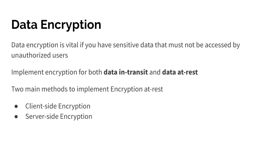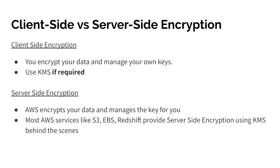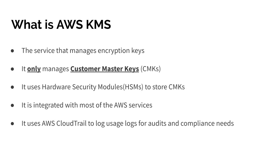There are two main methods for encryption at rest. The first is client-side encryption, where you encrypt your data on the client side and send it to the server or back-end services like S3, EBS, or Redshift. The second is server-side encryption, where you let your back-end services encrypt the data and manage those keys on your behalf. In client-side encryption you manage your own keys, and you can use KMS as a key management infrastructure. In server-side encryption, most AWS services like S3, EBS, and Redshift use KMS behind the scenes.